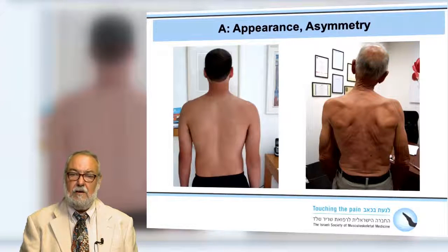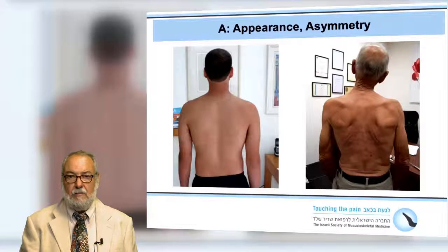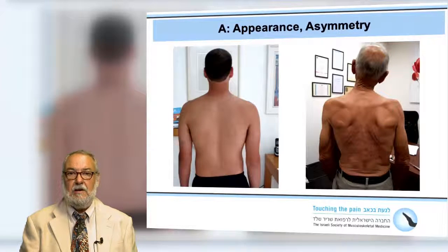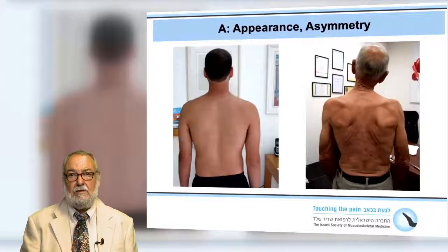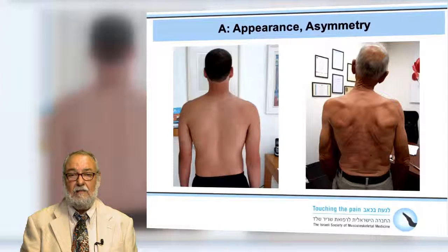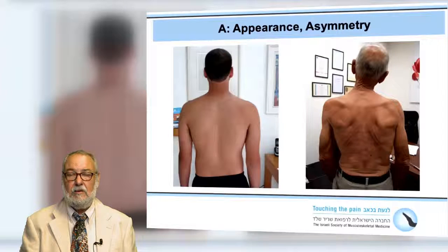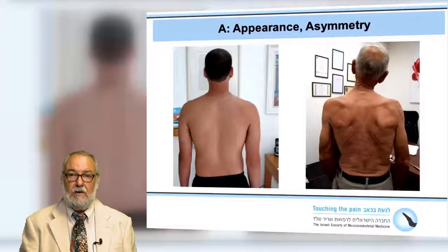In A, we're referring to appearance or asymmetry. Look at these two pictures. You can see the young man on the left-hand side and the more elderly man on the right-hand side. Both have mildly asymmetrical pictures. For example, the man on the right-hand side has his neck tilted slightly to the right, his left shoulder is slightly higher, and the alignment of his scapulae are not exactly equal. Is this important? Is this relevant? Well, obviously this would be based on his history and on other clinical findings.